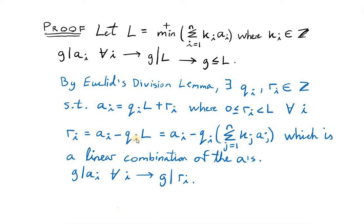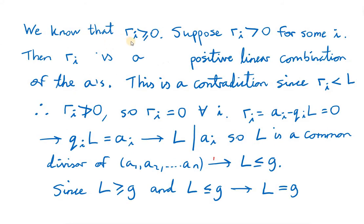If we make ri the subject and substitute in for l, we see that ri is actually a linear combination of all the a's. From the division lemma we know ri is non-negative — greater than or equal to zero. We will show that ri equals zero. To do that, we suppose that ri is strictly greater than zero. We just saw that ri is a linear combination of the a's, so if ri is greater than zero it is a positive linear combination of the a's. From the division lemma, ri is less than l. But l is supposed to be the least positive linear combination of the a's — so here is our contradiction. If l is the least positive linear combination, ri cannot be less than l. We conclude that ri must equal zero.